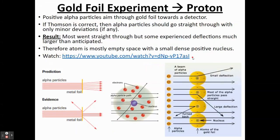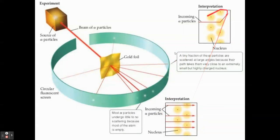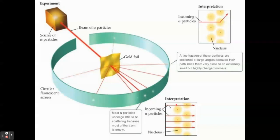The gold foil experiment again highlights what should have happened versus what actually happened. You can see that alpha particles hit the nucleus, and that's why some of them deflect. But most go through the gold sheet because the atom is mostly empty space.